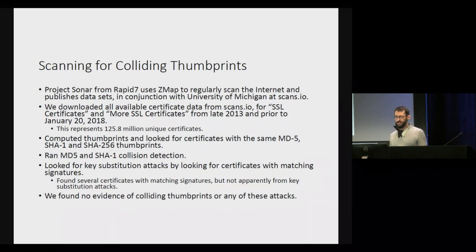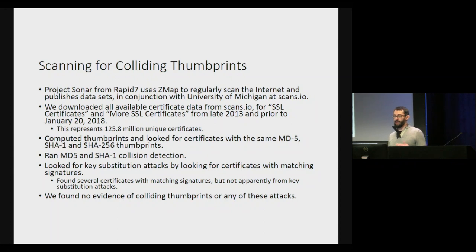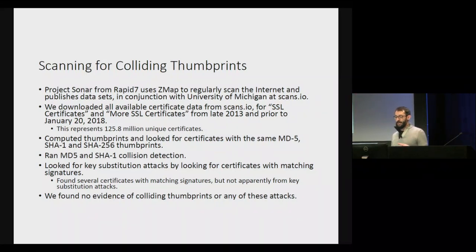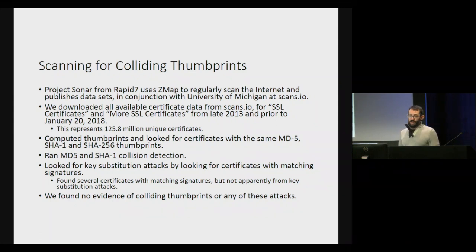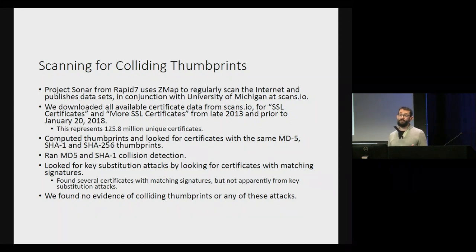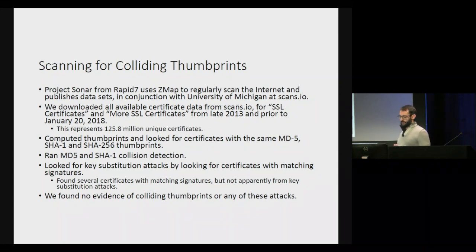We scanned for colliding thumbprints in the wild using datasets from Project Sonar published at scans.io — representing 125.8 million unique certificates. We computed thumbprints and looked for certificates with the same MD5, SHA-1, and SHA-256 thumbprints. We didn't find any. We ran MD5 and SHA-1 collision detection — did not detect anything. We also looked for key substitution attacks by looking for certificates with matching signatures and did find several such certificates, but on closer inspection, none appeared to be created with key substitution attacks. In short, we found no evidence of colliding thumbprints or any of these attacks.